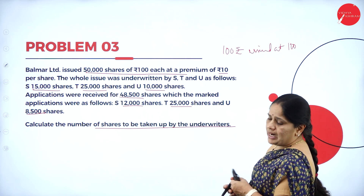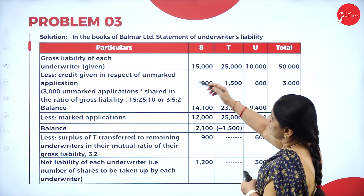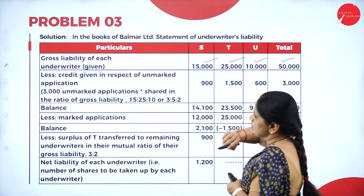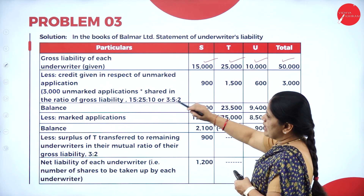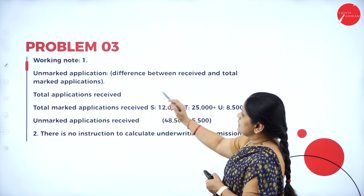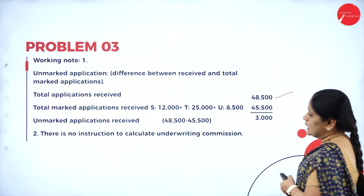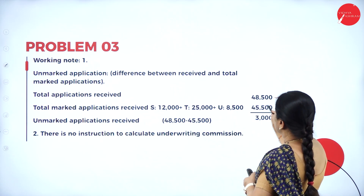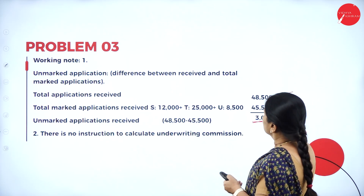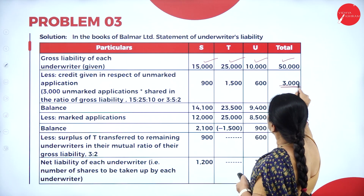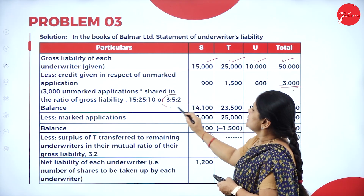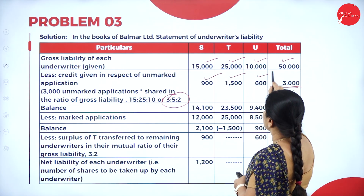Here 50,000 shares are issued and the entire 50,000 has been completely underwritten. Applications were received for 48,500; out of these, marked applications are 45,500. The gross liability is 15,000, 25,000 and 10,000. The unmarked applications: total received 48,500 minus marked 45,500 gives 3,000 unmarked applications. This 3,000 is divided in the ratio 3 is to 5 is to 2, giving 900, 1,500 and 600.